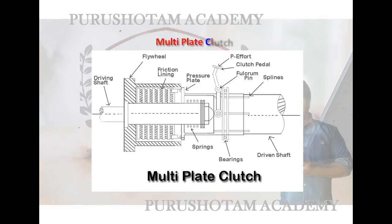Looking at the figure of the multi-plate clutch, we can identify the key components. This is the driven shaft, this is the driving shaft, this is the clutch pedal, and this is the effort. We also have the fulcrum pin, the pin base, the pedal, and the splines. These are called splines, and we also have the bearings.